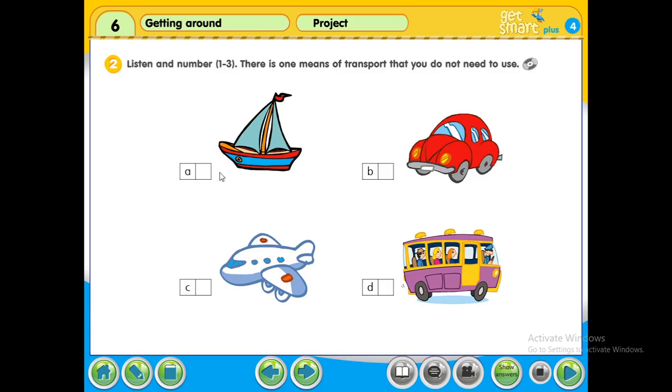You're going to write numbers here. So there's one means of transport that you do not need to use. That means number 1 to 3, but here we have four pictures. So there's one picture, one means of transport that you do not need to use.